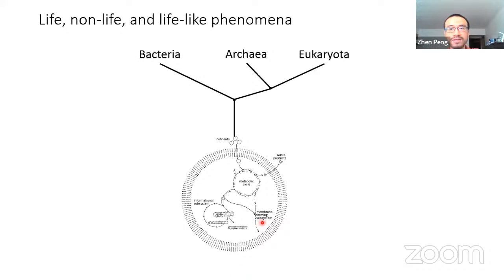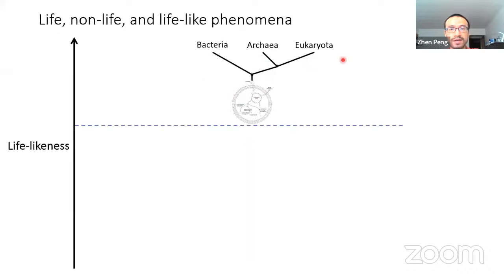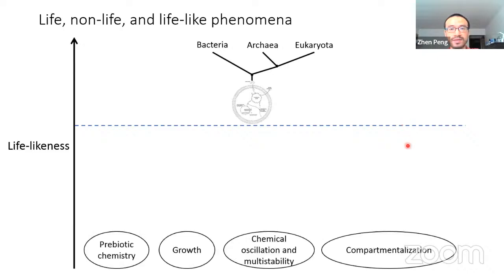Once the primitive form of cellular life appears, it would adaptively evolve into life as we know today. Let us assume there is some index that measures how much a system looks like life. The cellular form of life should have a high index beyond the threshold distinguishing life from non-life. On the other hand, we have already known that multiple non-life systems have some life-like features, which should be plotted on the lower part of this graph.